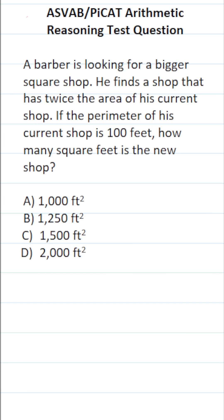This arithmetic reasoning practice test question for the ASVAB and PICAT says: A barber is looking for a bigger square shop. He finds a shop that has twice the area of his current shop. If the perimeter of his current shop is 100 feet, how many square feet is the new shop?